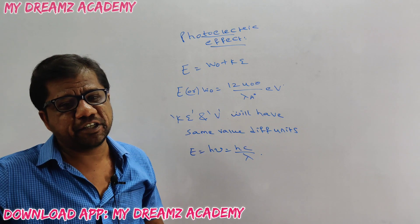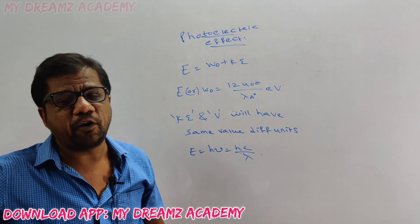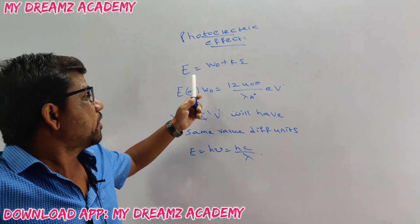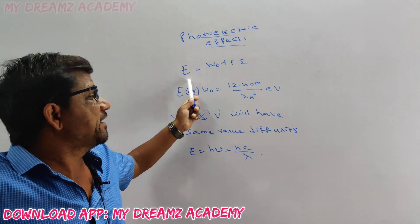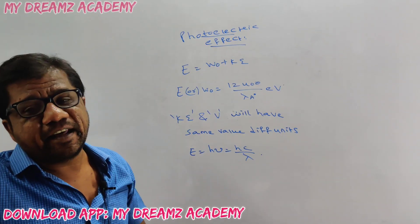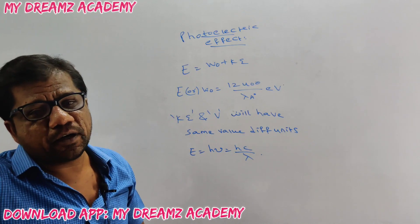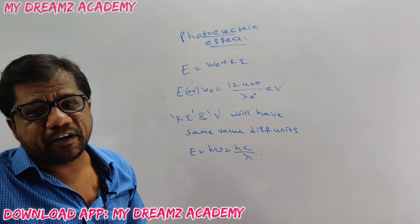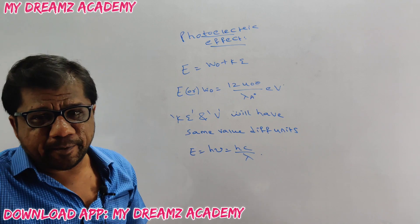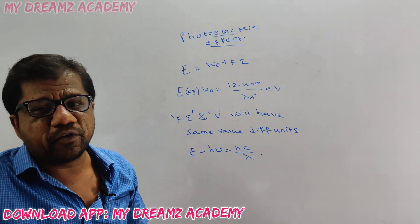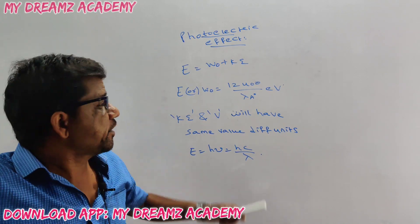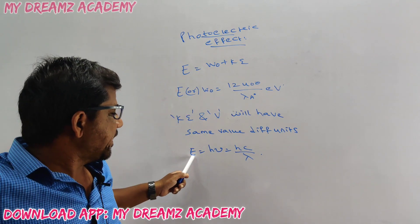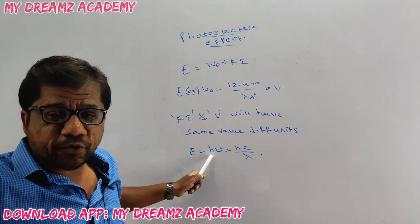Before going to the expected questions, we will summarize just a single formula — this is called the Einstein photoelectric equation. The basic equation is: E is equal to W-naught plus KE, where E is the incident energy, W-naught is the work function, and KE is the kinetic energy. For every metal, to release an electron, it requires a minimum energy — that minimum energy is called the work function.